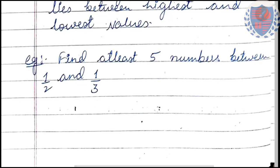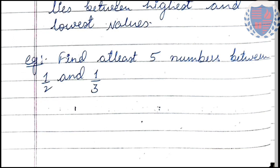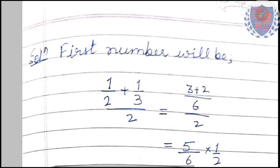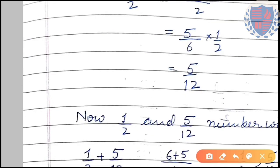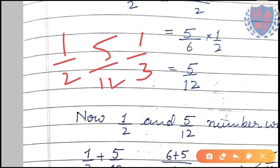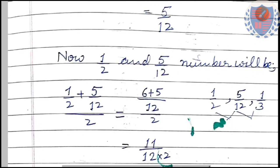Now let us see one more example. Find at least five numbers between 1/2 and 1/3 — two fractions are given and we have to find five numbers between them. To find them, we can take the mean: (1/2 + 1/3) divided by 2. After solving this, we get 5/12 as one number between 1/2 and 1/3.